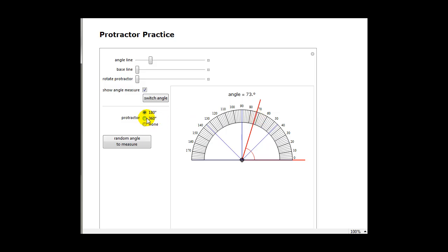Now some protractors have three hundred and sixty degrees, but most only have one hundred eighty. So if we had an angle that was more than one hundred eighty degrees, we would have to rotate this protractor to find the full measure of that angle.